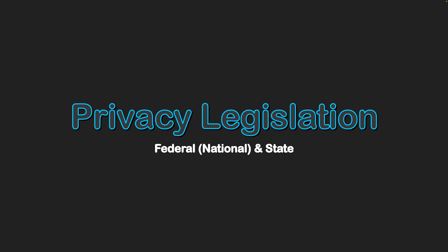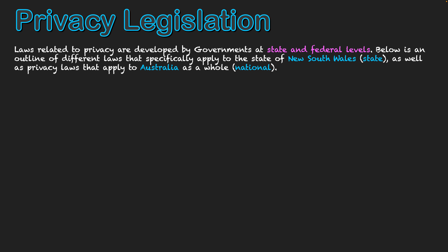Privacy legislation, national and state. Laws related to privacy are developed by governments at state and federal levels. Below is an outline of the different laws that specifically apply to the state of New South Wales at state level, as well as privacy laws that apply to Australia as a whole at national level. So firstly, we'll take a look at a national level.